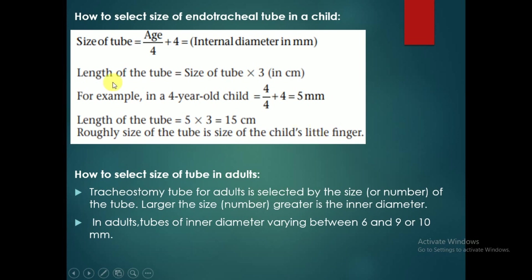How to select the size of tracheostomy tube in children: the size of the tube is calculated with the formula (age/4) + 4, which gives the inner diameter in mm. The length of the tube can be calculated by multiplying the tube size by 3, giving the reading in centimeters. For example, for a four-year-old child, using this formula, a 5 mm tube is suitable. Roughly, the size of the tube corresponds to the size of the child's little finger.